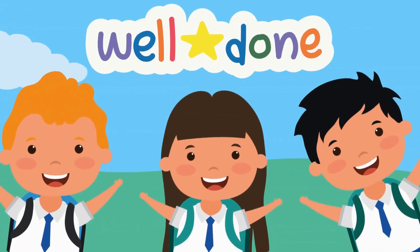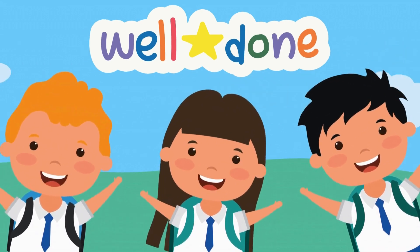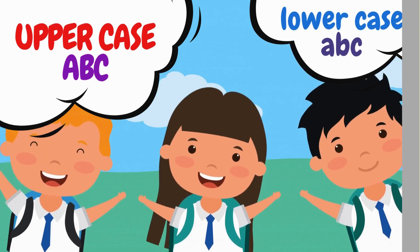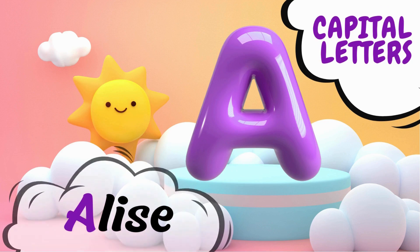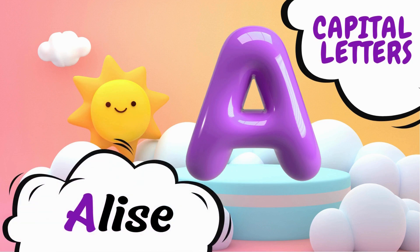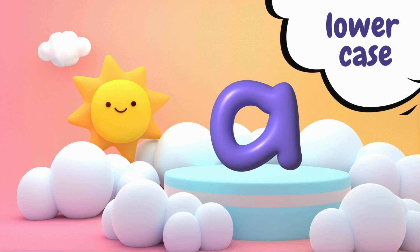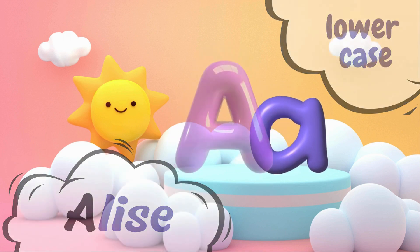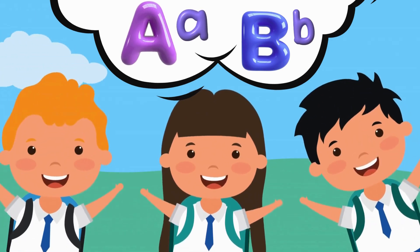Well done! Now let's practice our letters with the alphabet board. We will learn how the uppercase and lowercase of letters look like. We use big letters, called capital letters, at the start of a name and at the beginning of a sentence. The small letters, called lowercase letters, are used for most of the writing. Big letters help us know where something important starts. Now let's have a look at the upper and lowercase letter board.